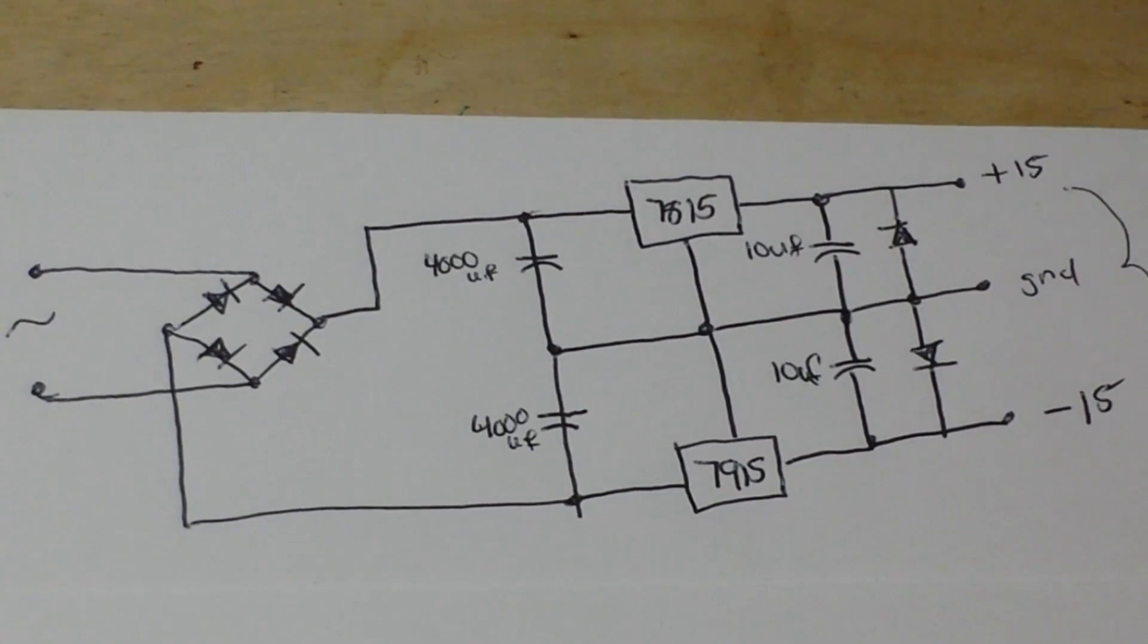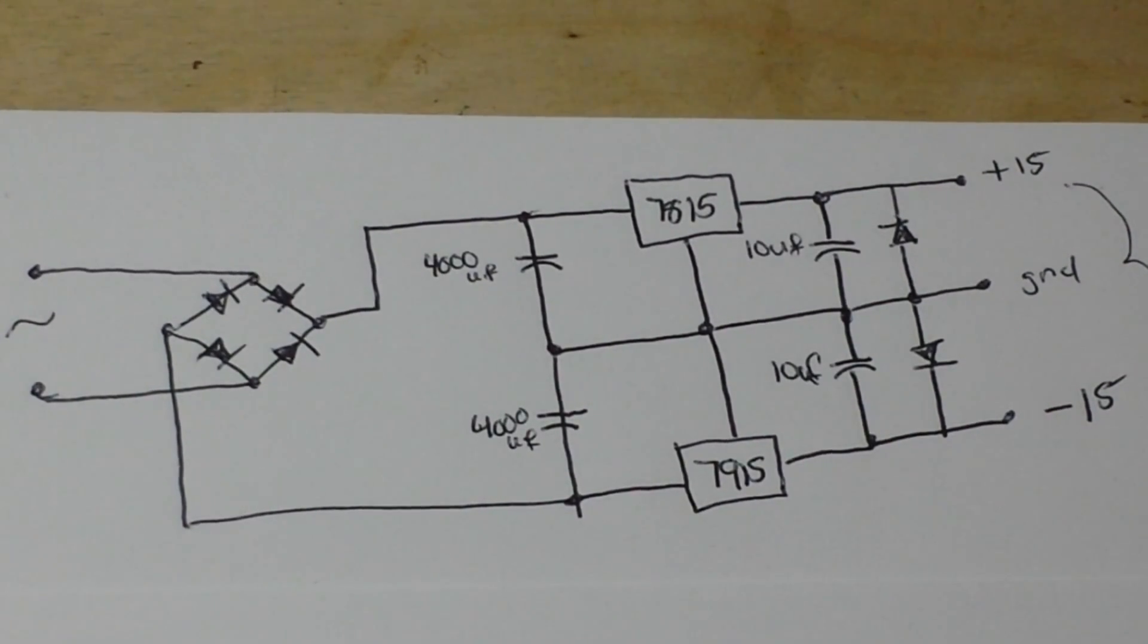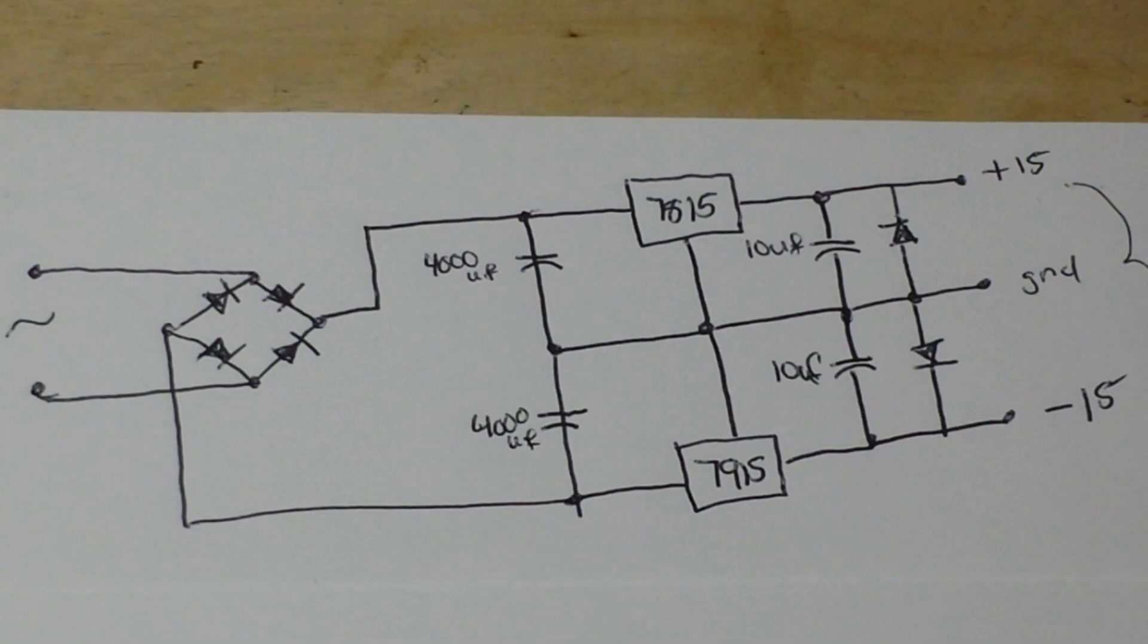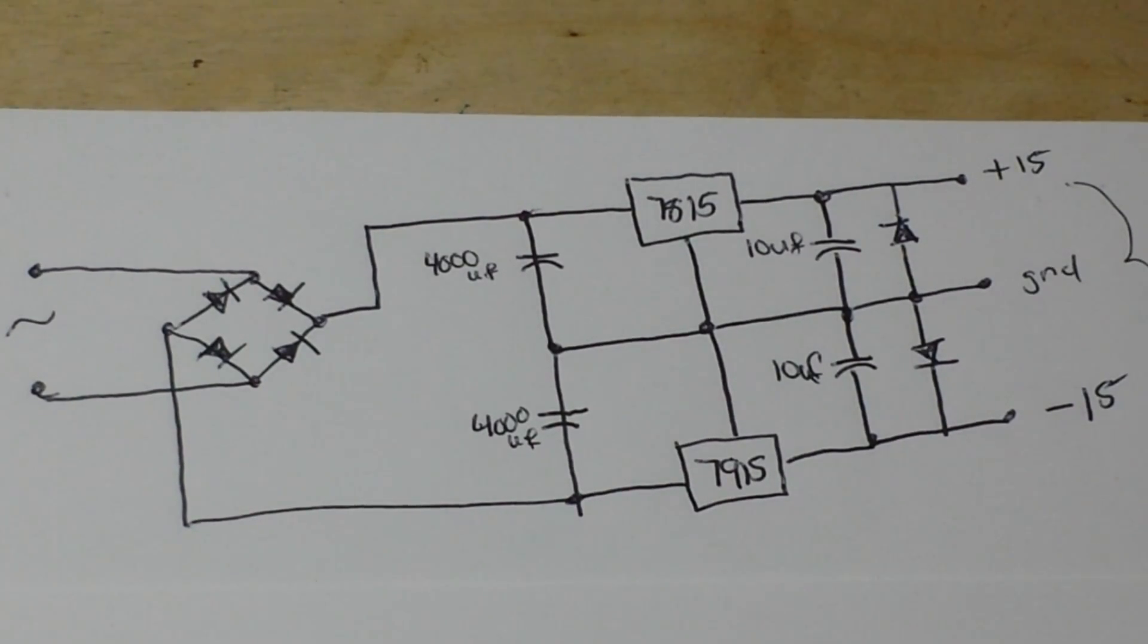Of course, across our output here would be our load, because nothing matters without a load. Otherwise there's just not any information. We have our filter capacitors there to help us control ripple. So what is ripple? Well, ripple is just the fluctuation of the voltage. You know what AC looks like, up and down. DC is supposedly a straight line.